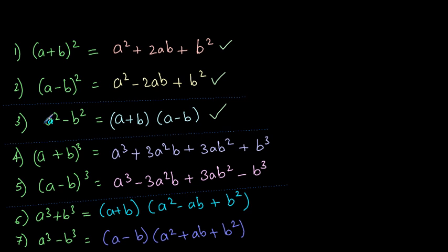Formula number three: a square minus b square gives you (a + b) into (a − b). This is one of the easiest formulas to remember.